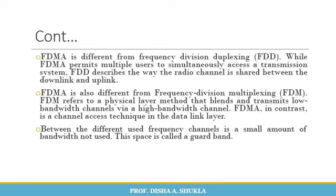The third type is full duplex, which is what we use in regular communication — both users can transmit data simultaneously as and when they want. The key point is that FDMA is different from Frequency Division Duplexing. While FDMA permits multiple users to simultaneously access a transmission system, FDD describes how the radio channel is shared between downlink and uplink.